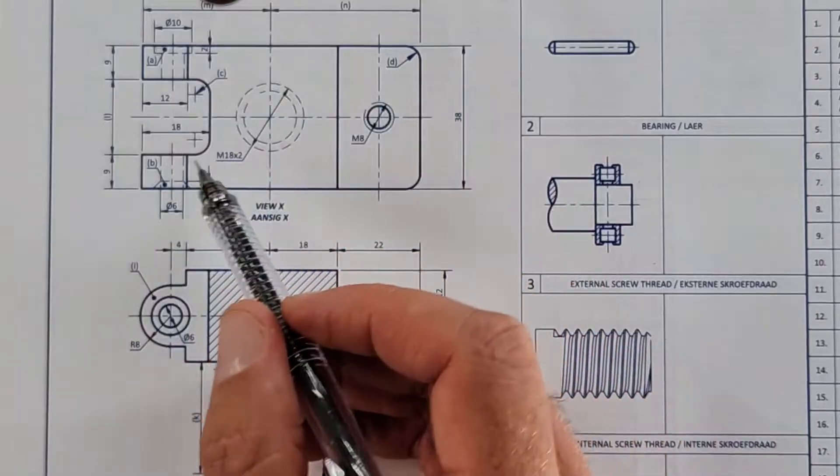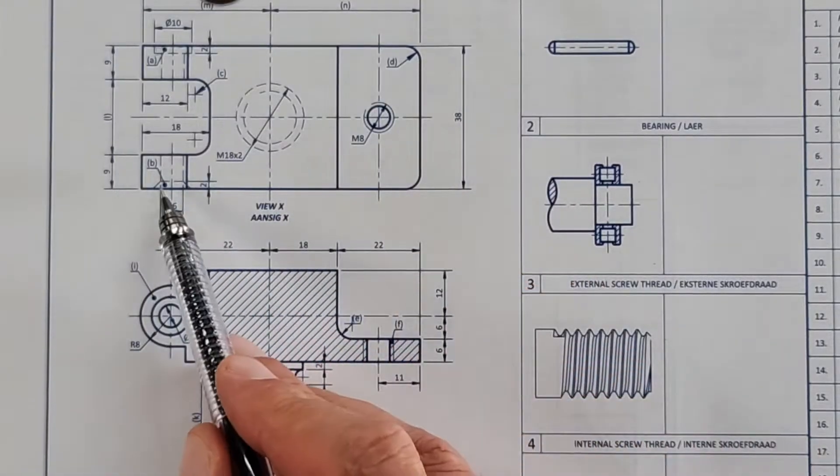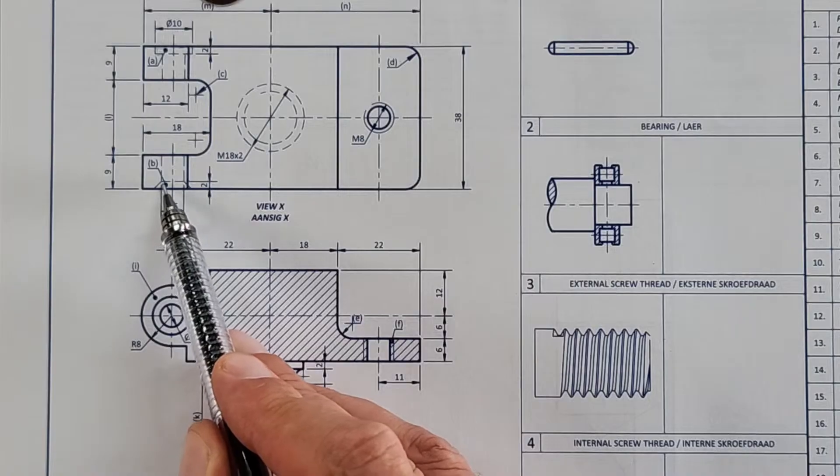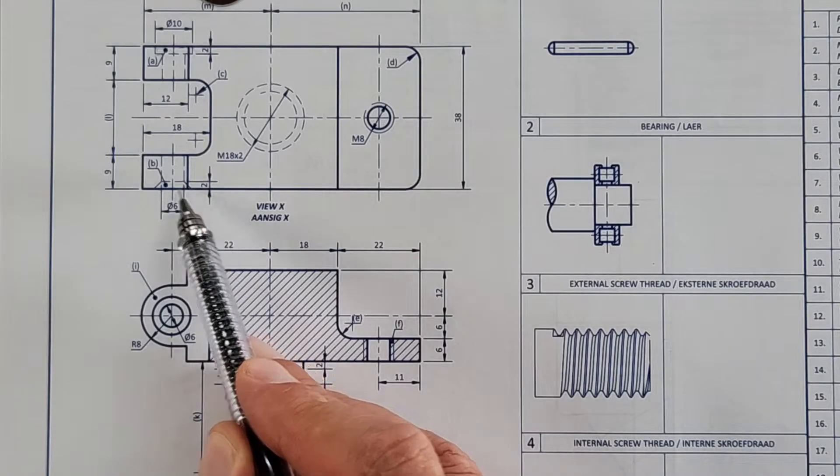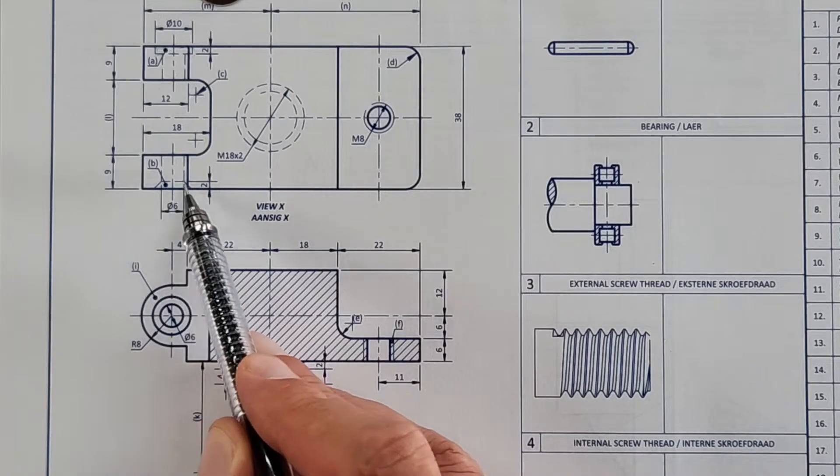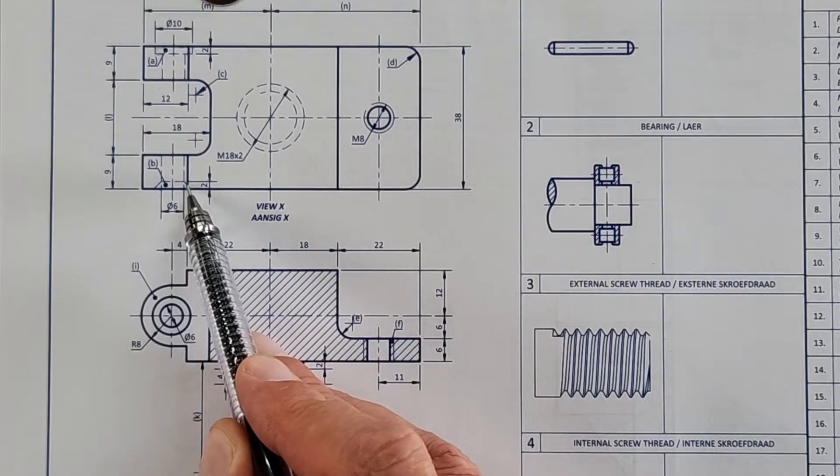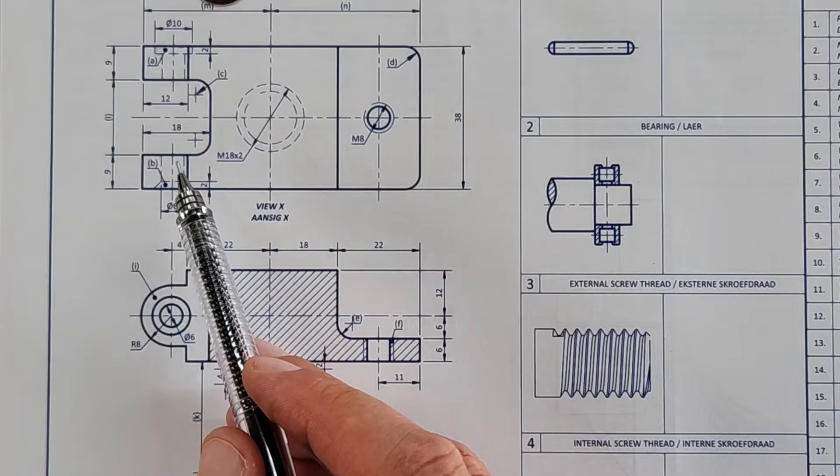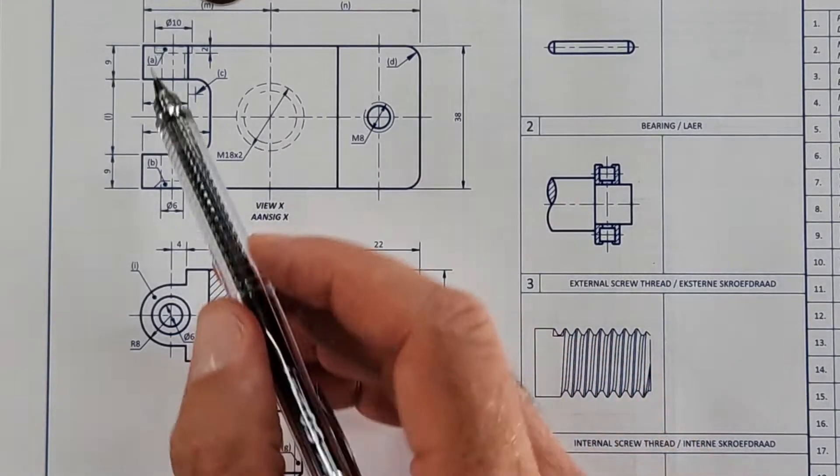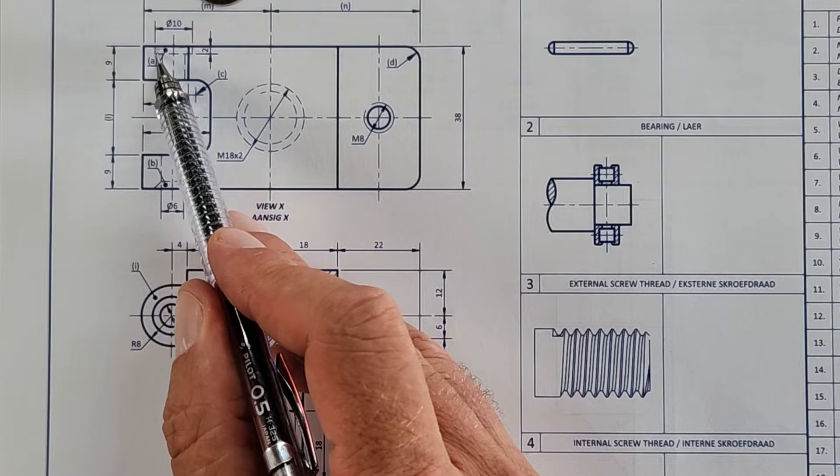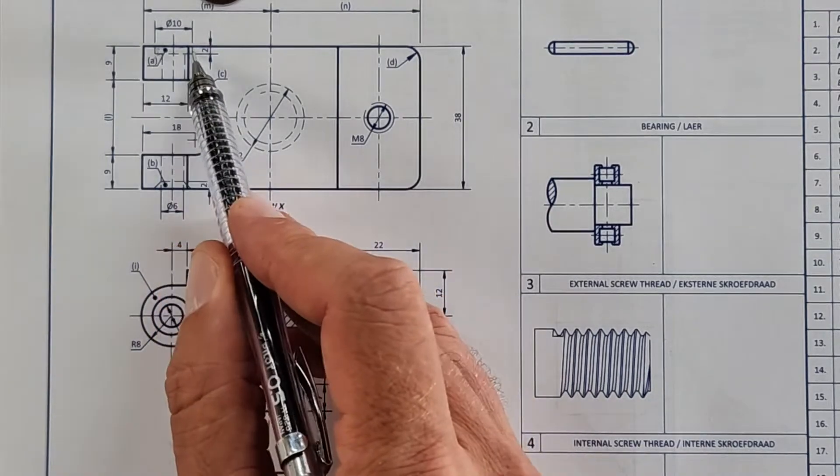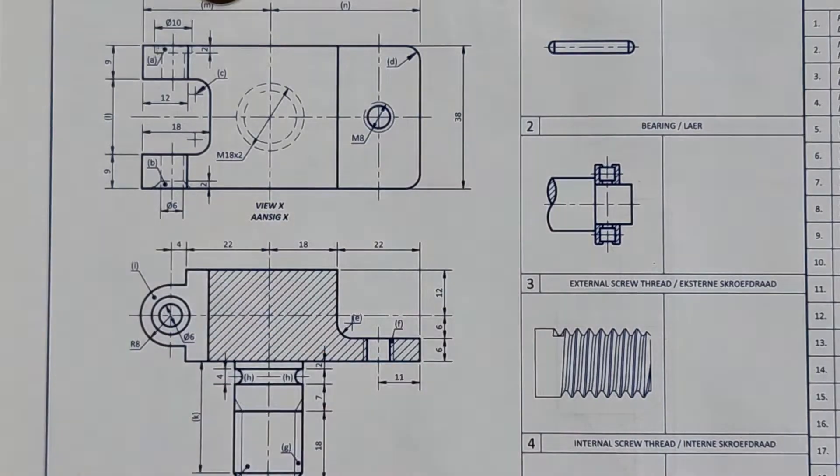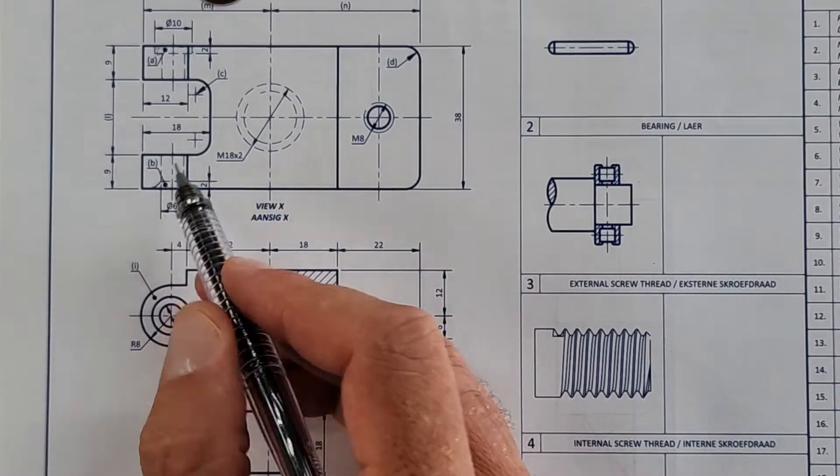Then they ask us, what does B represent? That now is a countersunk, countersunk at 45 degrees, Afrikaans versinte gat. When it's at an angle it's just called a counter bore hole. When it's at an angle it's countersunk. When it's straight it is a counter bore. So parallel versinte, or if it's just 45 degrees, it's versinte gat. You see the difference there.